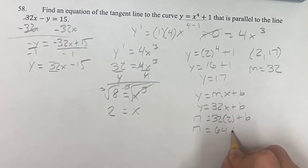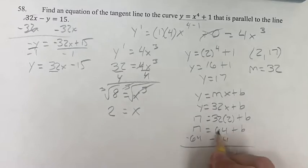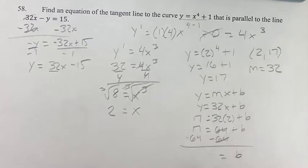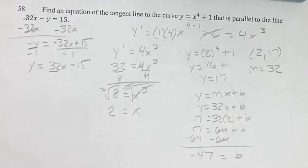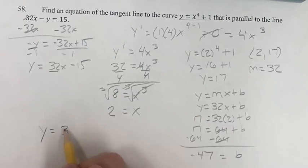17 equals 64 plus b. Subtracting 64 on both sides, these cancel out and we get b equals negative 47. So, then you get your equation of the tangent line is equal to 32x plus b, which is minus 47.